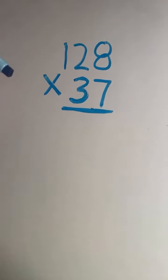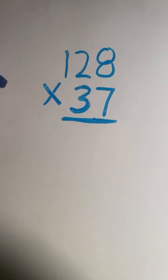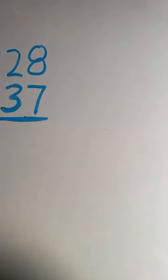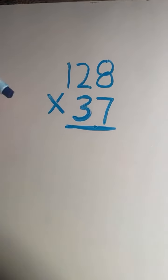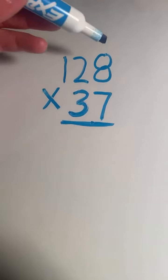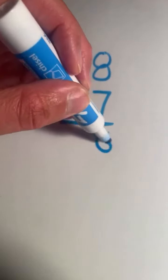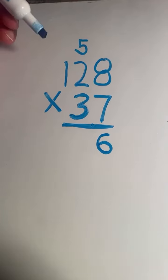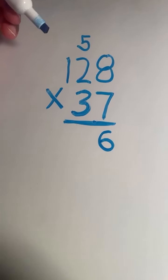All right, next example problem we have 128 times 37. So we're going to start out in the ones place. We're going to multiply 8 times 7. 8 times 7 equals 56, so the 6 in 56 goes to the ones place. The 5 in 56 gets carried over to the tens place. Any time our product is 10 or more, we will need to regroup.